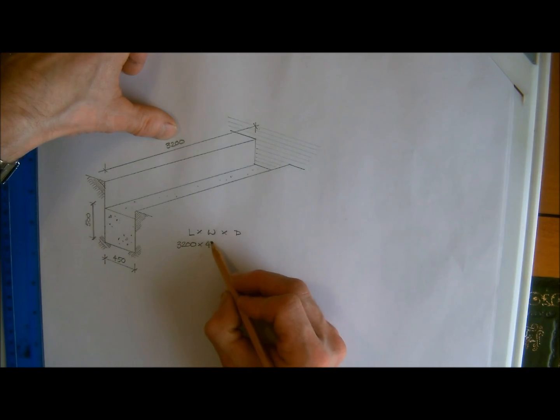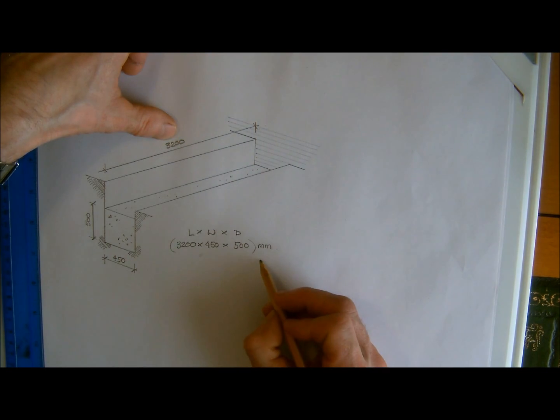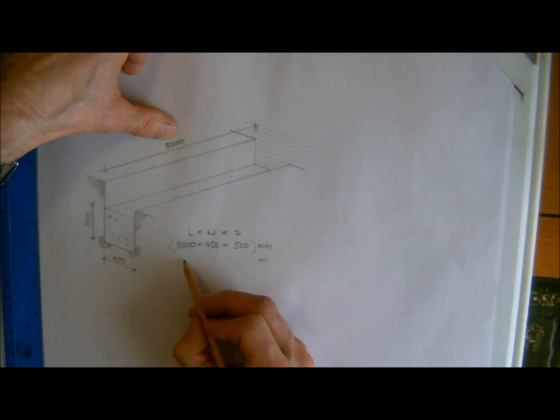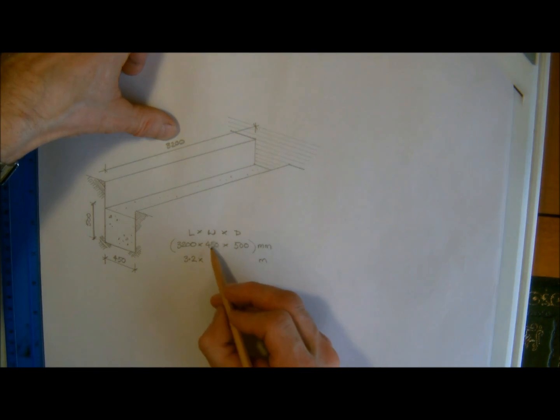So the width we've got four fifty and the depth we've got five hundred. I'm going to put that in brackets because they're all in millimeters. For the calculation we want to make sure they are in meters. So three thousand two hundred will be three point two meters. And obviously four fifty millimeters will be zero point four five. And five hundred millimeters will be zero point five.